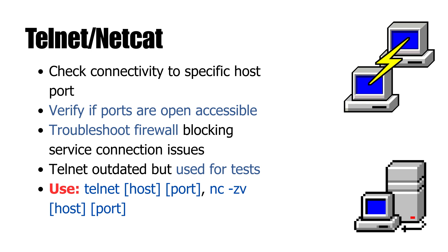Finally, Telnet and NC, short for Netcat. Both are used to test connectivity to a specific host and port. telnet example.com 80 checks if port 80 is open, and nc -zv example.com 80 does the same thing on Linux and macOS. They're especially handy when you need to know if a firewall is blocking access or if a service is listening. Telnet is older and insecure, but still useful for quick tests. Netcat, on the other hand, is more versatile — it can do everything from port scanning to file transfers, making it the preferred modern option.